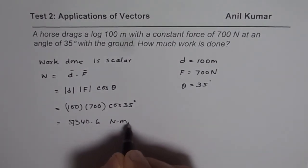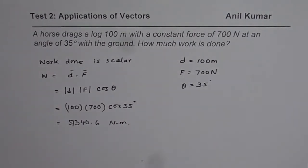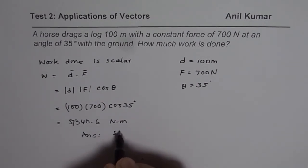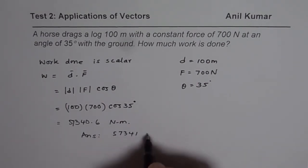So Newton meters. That becomes the answer for the particular question. You can always round it to one decimal place and you can write this answer as 57341 Newton meters.